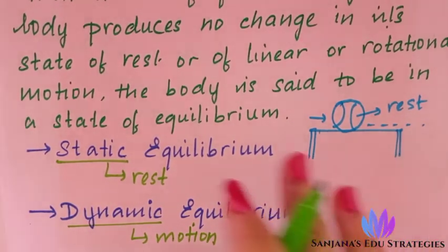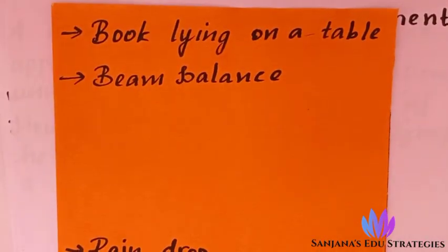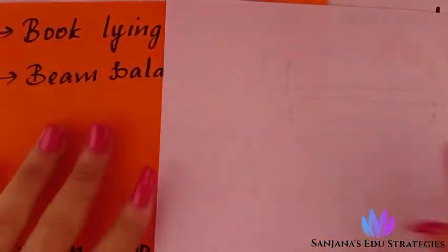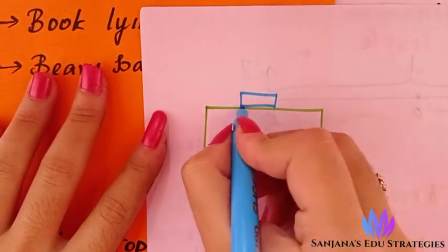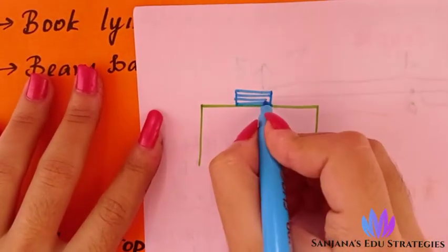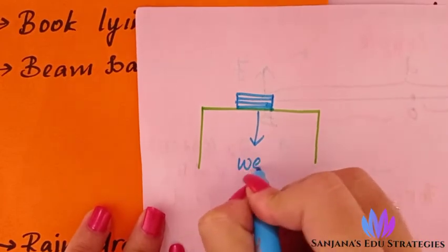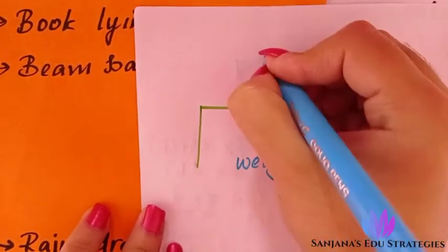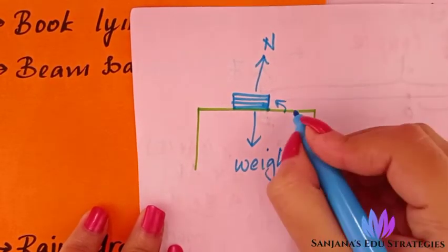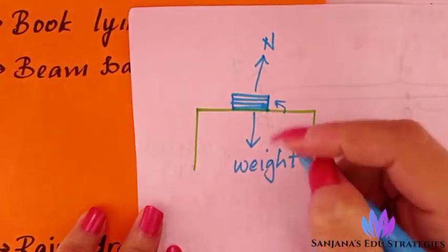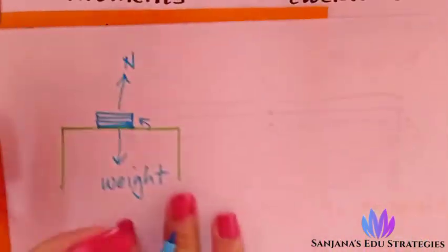Now we will see some examples. The first two are examples for static equilibrium. First: a book lying on a table. There is a table and on it we are keeping a book — a pile of books. This book remains at rest. It has weight acting downwards, and there is a normal force — or reaction force — exerted by the table on the book acting upwards. These forces are balanced, so it is in an equilibrium state.